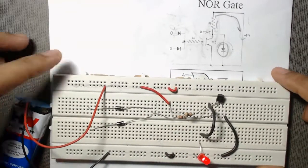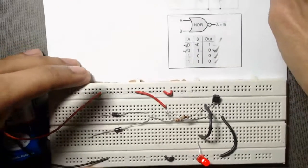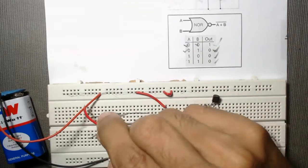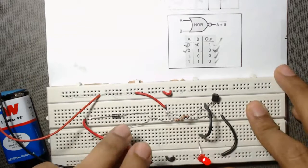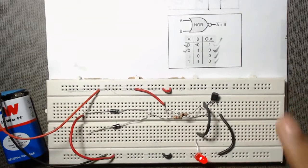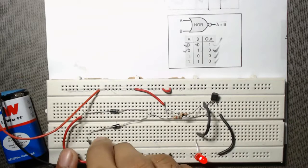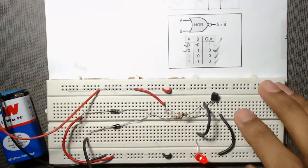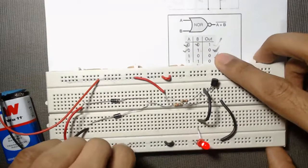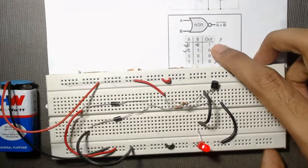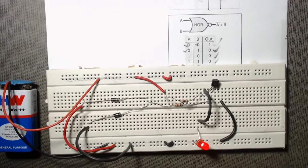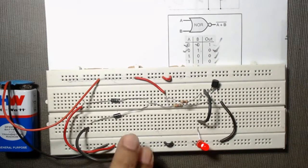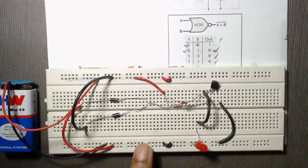Our circuit is now ready. We will observe the output. When A is zero, we connect terminal A to the ground row, and when B is also zero, we connect terminal B to ground as well. In this case the output is 1, so the LED is ON. When A is zero and B is one, we connect B to VCC — in this case the output should be zero, so the LED is now OFF.